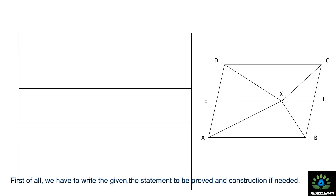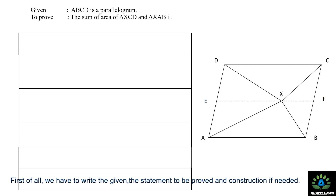Given: ABCD is a parallelogram. To prove: the sum of the area of triangle XCD and triangle XAB is equal to half of the area of parallelogram ABCD.